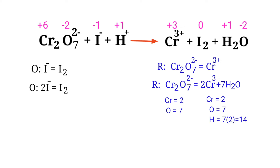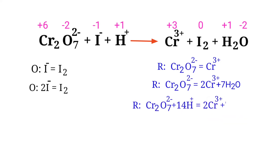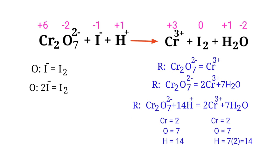We also add H+ ions to balance the hydrogen atoms. Now the number of atoms are balanced in the reduction half reaction.